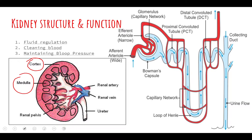The function of the kidney can mainly be summarized in three areas: fluid regulation, cleaning of our blood, and maintaining our blood pressure. The way it does this is through the afferent arteriole, where the blood supply passes through the nephron — this image here is the nephron and its parts.